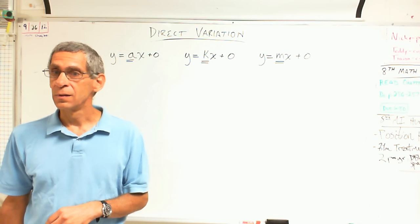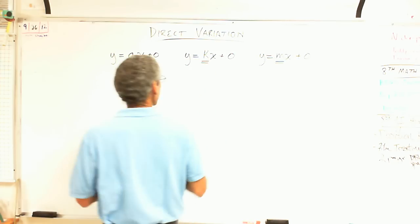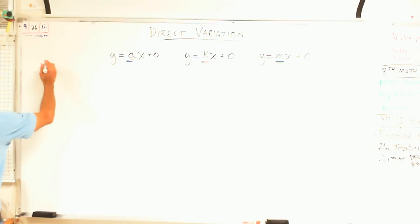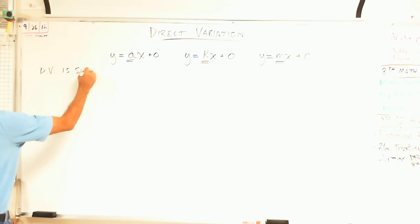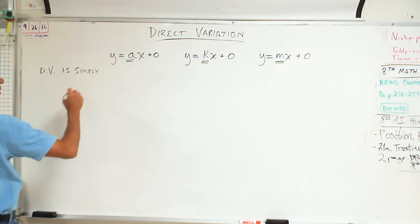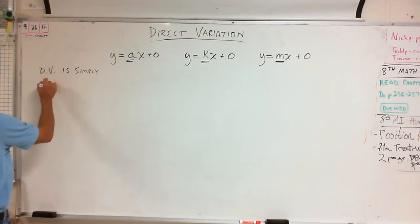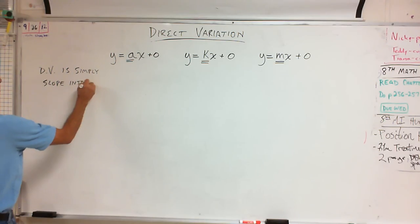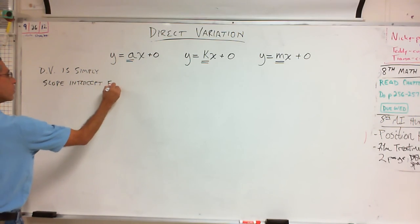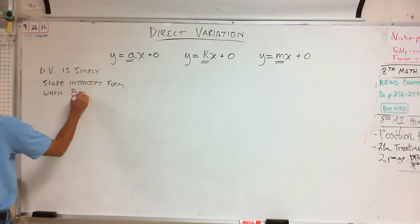It's slope-intercept form! Direct variation is so important. Direct variation is simply slope-intercept form when B equals zero.